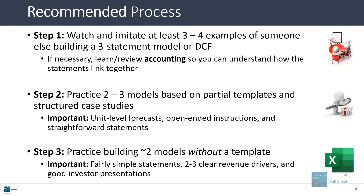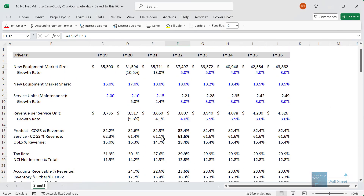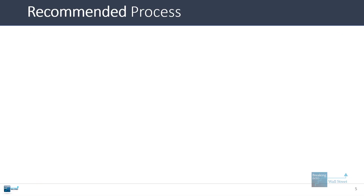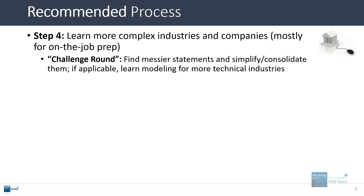Once you've done that, you can move on to practice models without a template. We covered a three-statement modeling case study on this channel based on Otis, an elevator manufacturer. You could take a company that you like or are interested in that's also fairly simple and try to create this type of model. After a few examples of that, you can move into more complex industries and companies — messier financial statements you have to simplify and consolidate, and more technical industries.